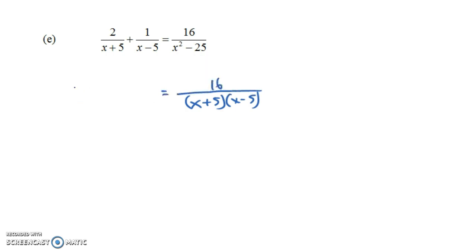On the left-hand side, we have 2 over x plus 5 plus 1 over x minus 5. So what we really need to multiply by is not x plus 5 times x minus 5 times x squared minus 25. We can just multiply both sides of this equation by x plus 5 times x minus 5. Let's multiply both sides of the equation by this.